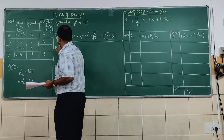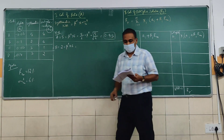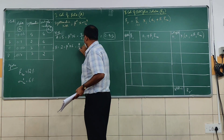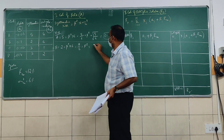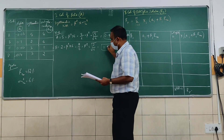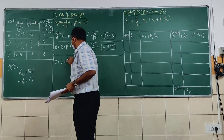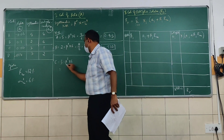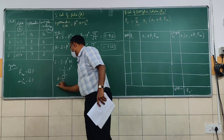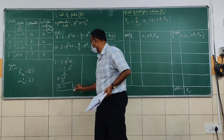Next, stock B: systematic risk is 2. The market variance remains the same. So 2 divided by 6 equals beta squared, giving beta = √(2/6) ≈ 0.577. For stock C: systematic risk is 3, so 3 divided by 6 equals beta squared. Taking the square root of 3 by 6 gives beta equal to 0.707.